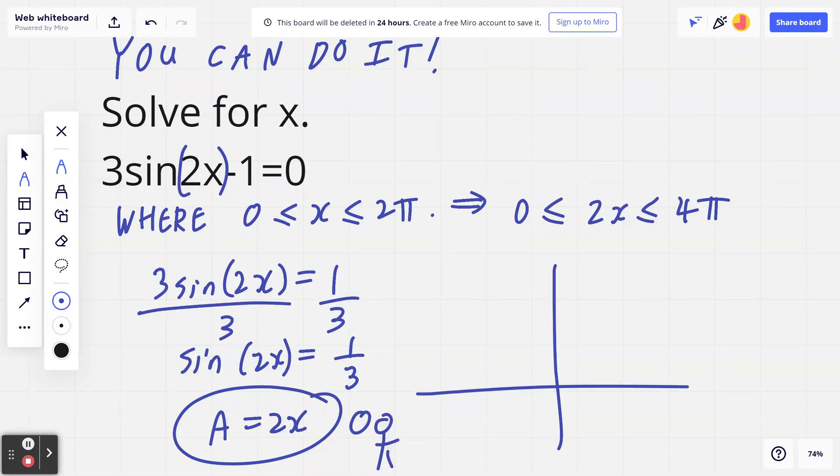So notice sine a equals 1 over 3, which is a positive number. So you go back and you recognize that there are two quadrants, 1 and 2, that you're thinking about. Opposite over hypotenuse.